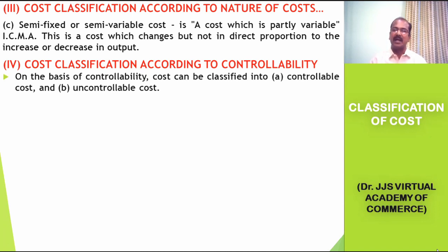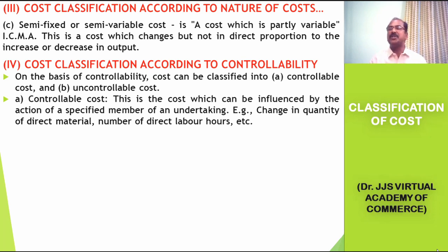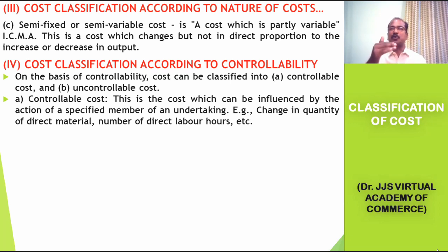The next classification is based on controllability. Cost can be classified into controllable cost and uncontrollable cost. Controllable cost is a cost which can be influenced by the action of a specified member or activity of an undertaking. For example, if the standard quantity of material to be used per unit is 2 kgs and a laborer uses more than 2 kgs, this increases cost. However, if the laborer's performance is improved to meet the standard of 2 kgs, the cost can be controlled, hence it is a controllable cost.